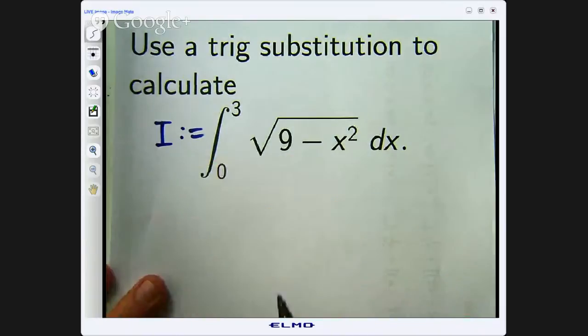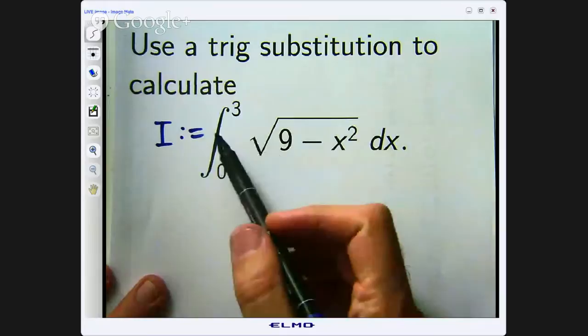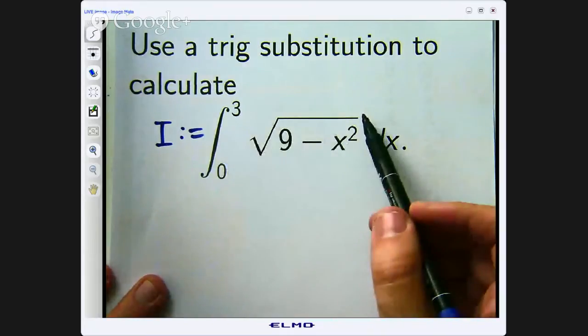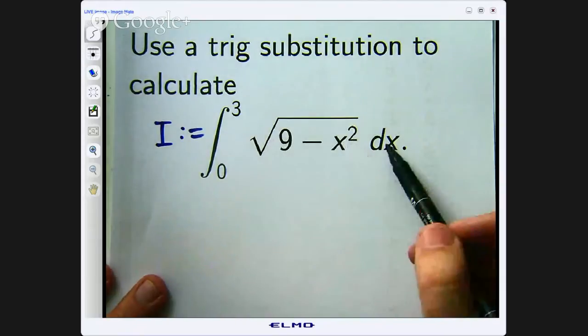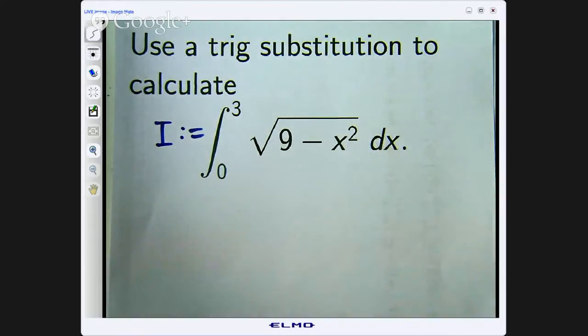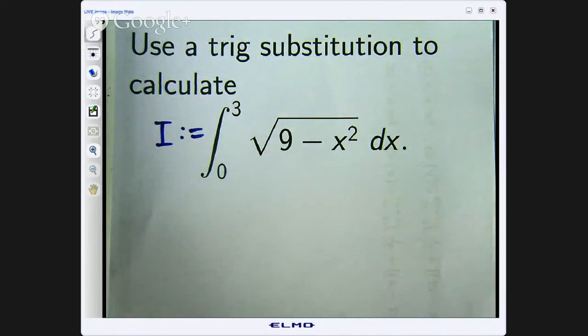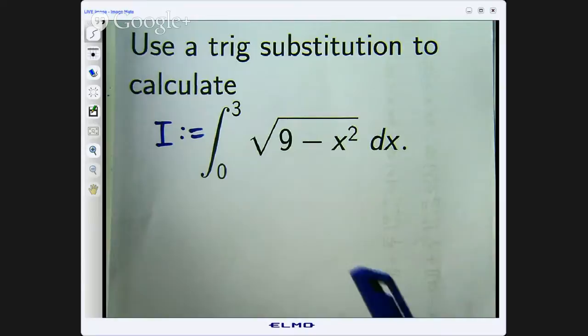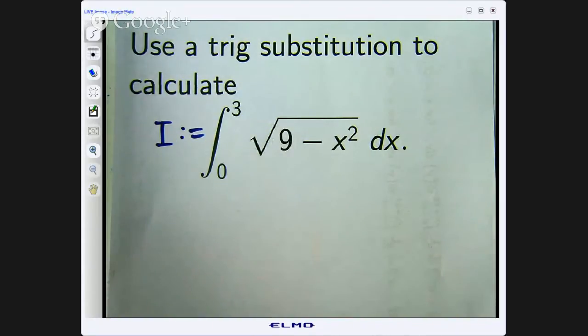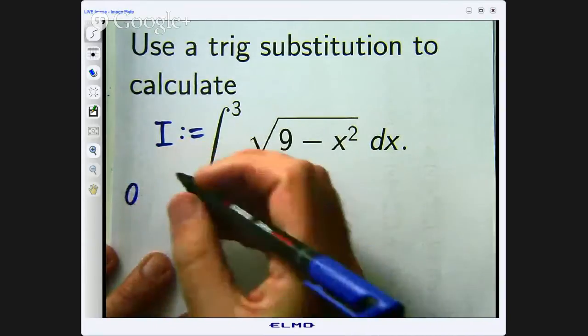First of all we notice that the integral involves a square root and a constant squared minus the thing that we are integrating with respect to the x squared the variable squared. Now that tells us that we can use say a sine function we are not told which trig substitution so we have to work out which one we want. But that shows us that the a squared minus x squared tells us that a sine function would be suitable so let us just write that down.